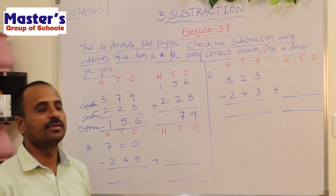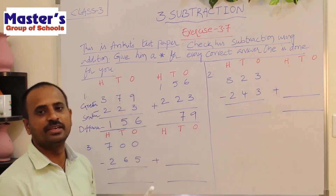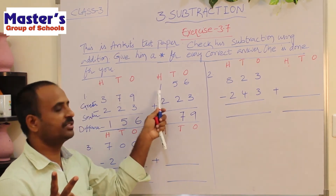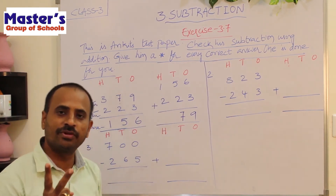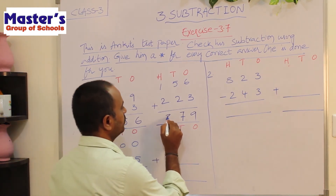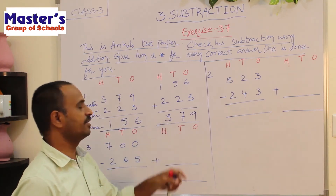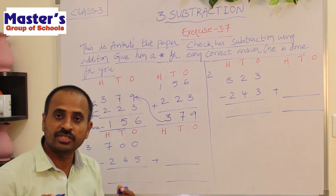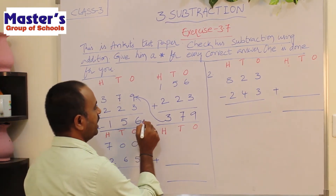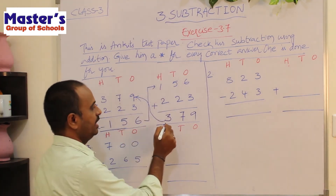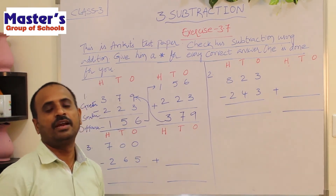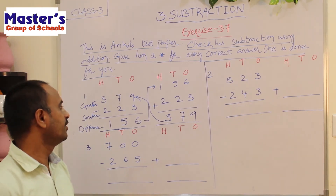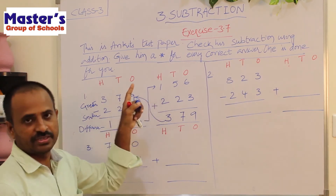Go to tens place: 5 and 2 are present. Open 2 fingers, start counting after 5: 6, 7. The answer is 7 — write 7. Go to hundreds place: 1 and 2 are present. After 1 we get 2, start counting from 2: 2, 3. Write 3. We have got 379 — the greater number — so our subtraction is correct.